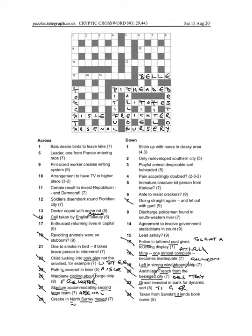7 down, going straight again, and let out with gun, so it's an anagram this, of and let, and then gun, meaning going straight again, and it's going to be untangled.